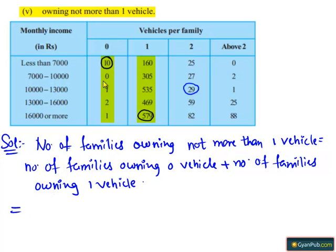which is equal to 10 plus 0 plus 1 plus 2 plus 1 plus 160 plus 305 plus 535 plus 469 plus 579